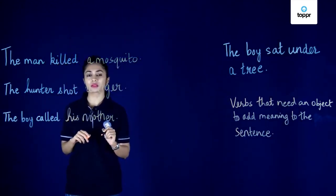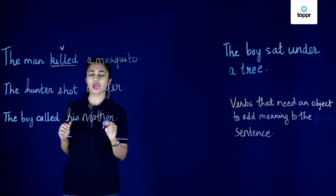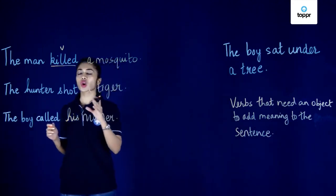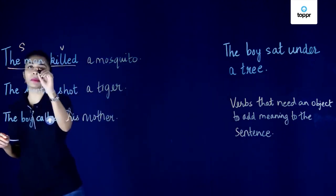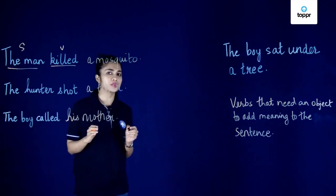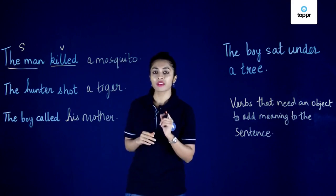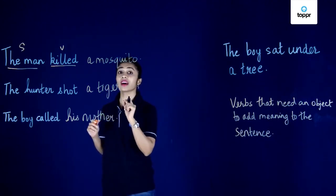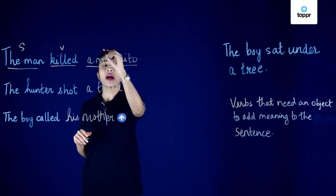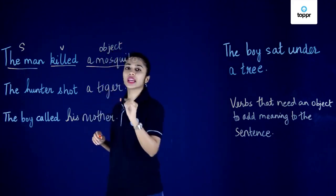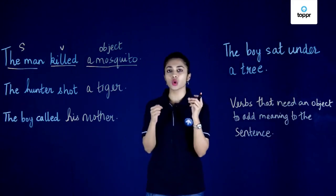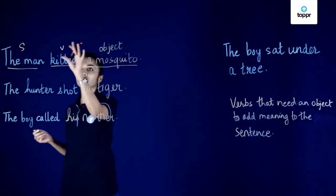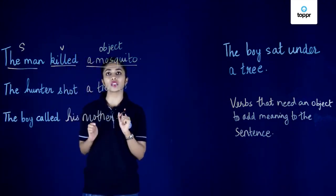What is the verb in this sentence? It is 'killed.' Then what is the subject? To find out the subject of a verb, we have to ask the questions 'what' or 'who.' So let's ask the question 'whom' — whom did the man kill? We get the answer: mosquito. Therefore, mosquito becomes the object of the verb 'killed.' Subject is the doer of an action and object is the receiver of an action. Mosquito is the receiver of the action of killing.